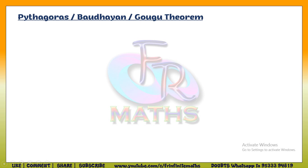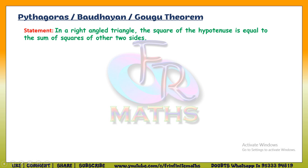First, let us look at the statement of this theorem. In a right angle triangle — it is always applicable for a right angle triangle — the square of the hypotenuse, which is the side opposite to the right angle, is equal to the sum of the squares of the other two sides. This is the statement of Pythagoras theorem, or Bauddayan theorem, or Gogu theorem.